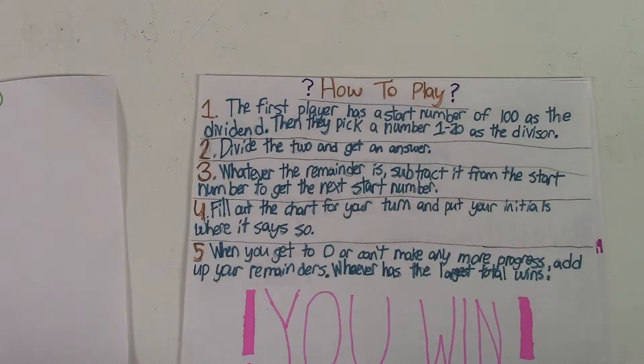Fill out the chart for your turn and put your initials where it says so. When you get to zero or can't make any more progress, add up your remainders. Whoever has the largest total wins the game.